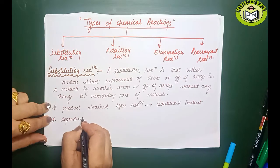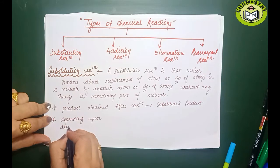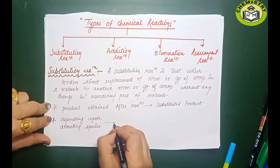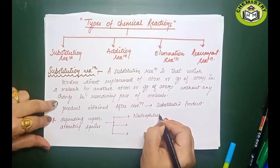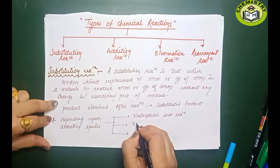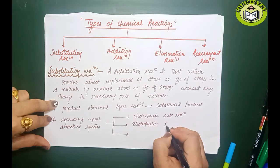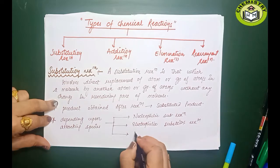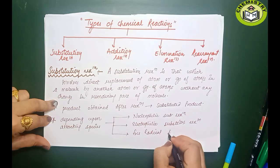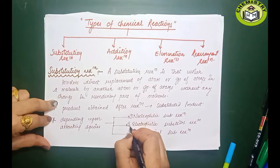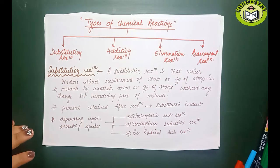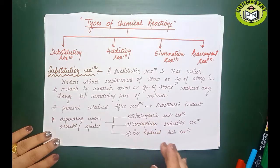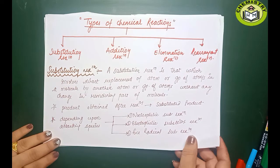Depending upon the attacking species, substitution reaction is basically of three types: first is nucleophilic substitution reaction, second is electrophilic substitution reaction, and third is free radical substitution reaction. To understand these, I will give you a brief introduction on what electrophile, nucleophile, and free radical are, because I am going to use these terms throughout this video and many students don't have their basics clear.